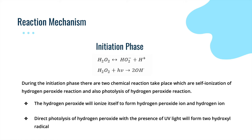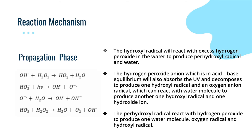In the first equation, hydrogen peroxide ionizes itself to form a hydrogen peroxide ion and a hydrogen ion. The second equation shows the direct photolysis of hydrogen peroxide in the presence of UV light, which produces two hydroxyl radicals. During the propagation phase, the hydroxyl radical reacts with excess hydrogen peroxide in the water to produce perhydroxyl radicals and water molecules. The hydrogen peroxide ion, in acid-base equilibrium, also absorbs UV light and decomposes to produce one hydroxyl radical and an oxygen ion radical, which then reacts with water molecules to produce another hydroxyl radical and a hydroxide ion. The perhydroxyl radicals also react with hydrogen peroxide to produce one water molecule, oxygen radicals, and hydroxyl radicals.